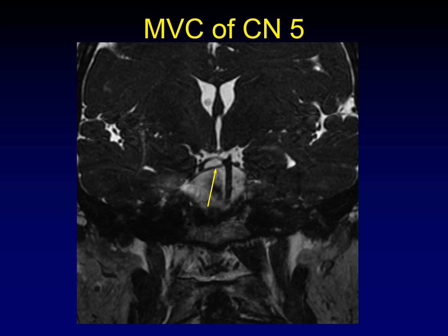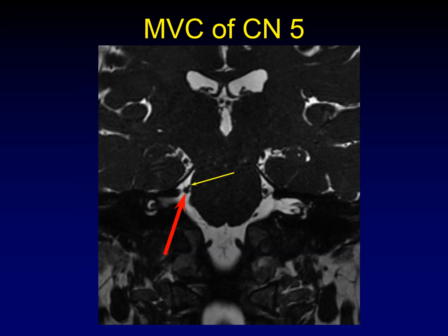Here is a coronal SSFP showing the origin of the superior cerebellar artery. Here's the basilar coming up to its tip; you can see the posterior cerebral arteries and the superior cerebellar artery coming out laterally, then heading inferiorly down towards the fifth cranial nerve. Once it gets down there, it will abut the fifth cranial nerve. The red arrow is the nerve and the yellow arrow points to the continuation of the superior cerebellar artery. You follow that artery from its origin down to where it may or may not touch the nerve.